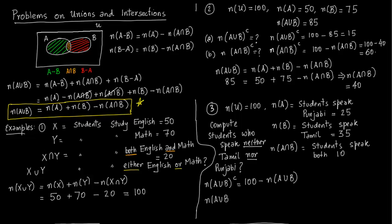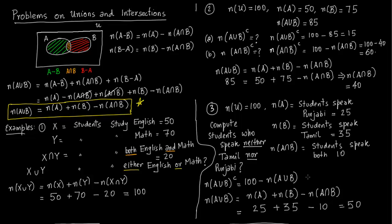We just find n(A∪B) using the formula: n(A∪B) = n(A) + n(B) − n(A∩B) = 25 + 35 − 10 = 50. Then n(A∪B)' = 100 − 50 = 50. So the number of students who speak neither Punjabi nor Tamil is 50.